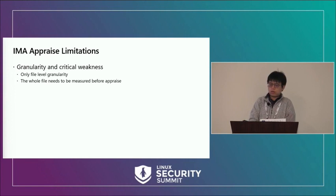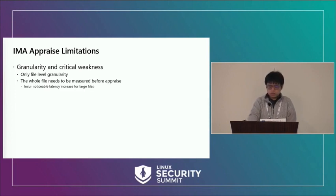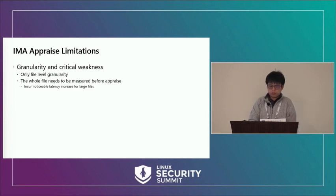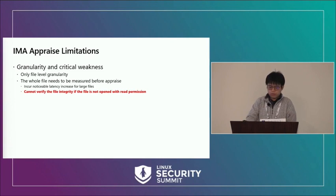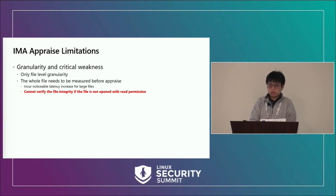The second issue is that the whole file needs to be measured before being appraised. Measuring here means reading the whole file content, hashing it, and using that hash as the file's fingerprint. This incurs very noticeable latency for large files. Additionally, IMA cannot verify file integrity if the file is not opened with read permission — essentially a system layering issue: because IMA operates above the file system level, it must interact with the file system to read file content, so if read permission isn't granted from user space, IMA won't be allowed to read it.